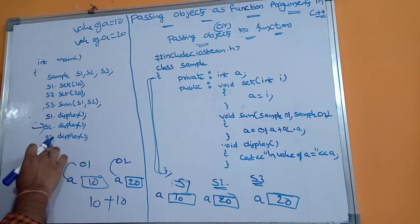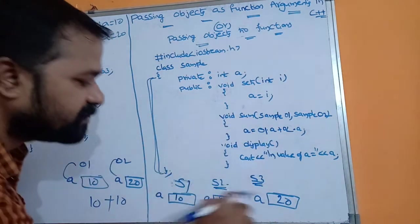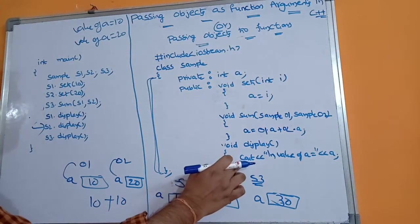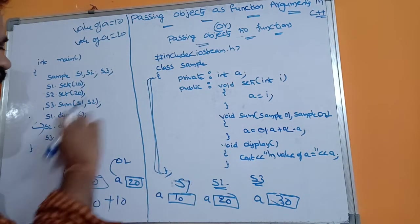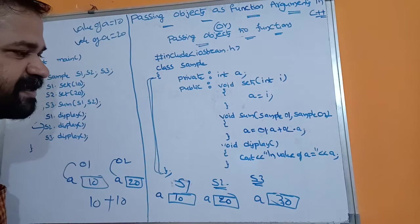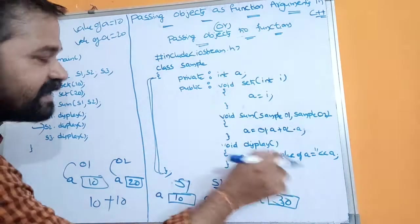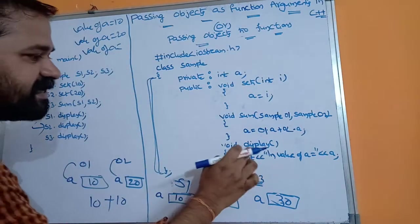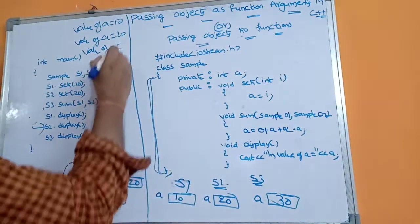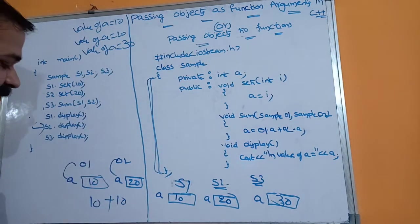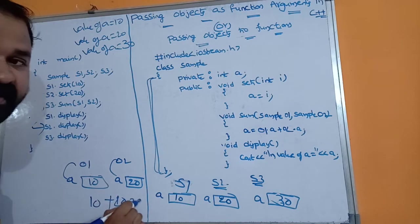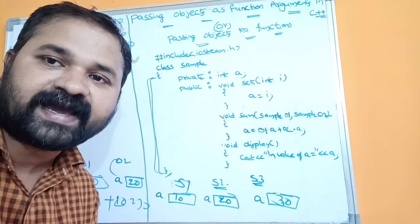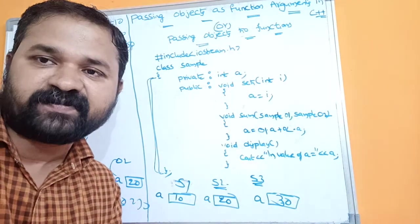Finally, s3.display() is called — control goes to the display function. In s3 the value of a is 30 (which is 10 + 20). So "Value of a = 30" is printed. This is how we pass objects as function arguments in C++.